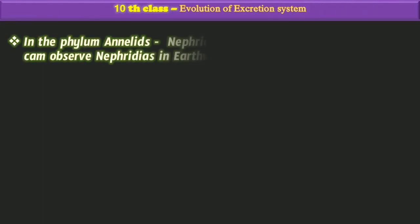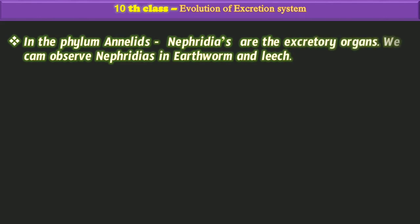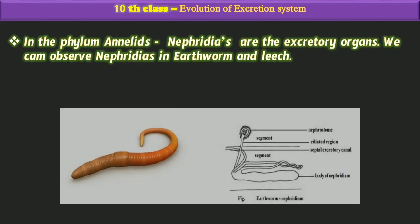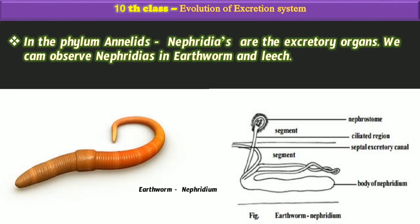In the phylum Annelida, nephridia are the excretory organs. We can observe nephridia in earthworms, leeches, and some other organisms which belong to Annelida. This is the structure of nephridia.